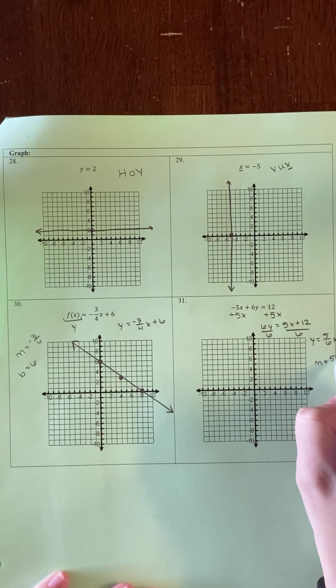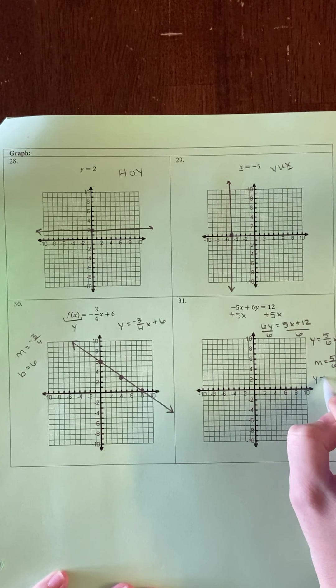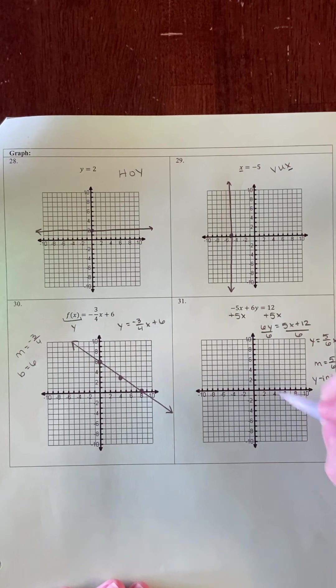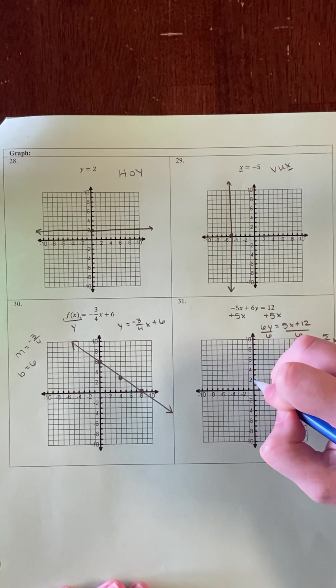The slope is 5/6 and the y-intercept is 2. I'm going to start at my y-intercept. I'll go on the y-axis to 2 and plot a point.